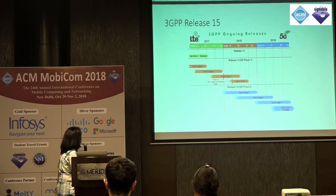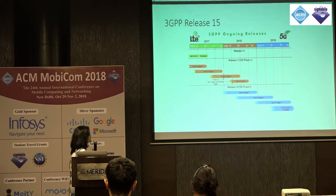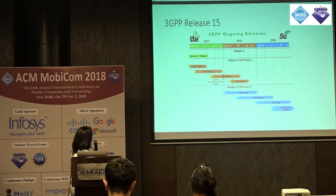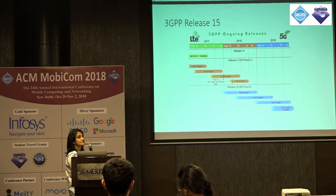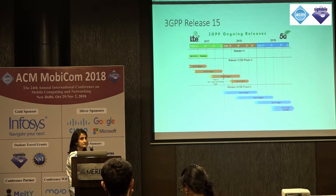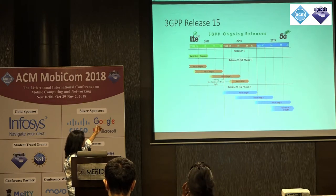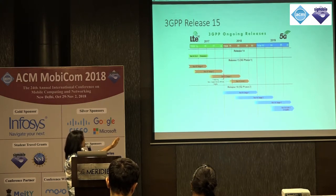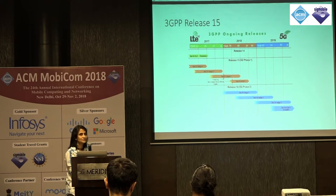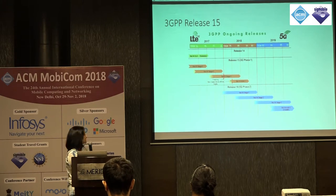This is a chart on the 3GPP timeline. Release 15, completed in mid-2018, defined both the standalone and non-standalone parts of 5G New Radio. The Release 16 study phase has already started, and 3GPP does this overlapping thing — as one release winds down, they're already starting study phases for future releases. The vision is to have Release 16 finish at the end of 2019, at which point 5G standardization will essentially be done. So there is still a fair amount of time before the standard is complete.